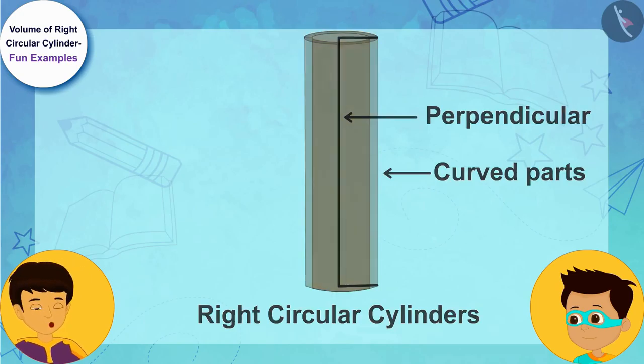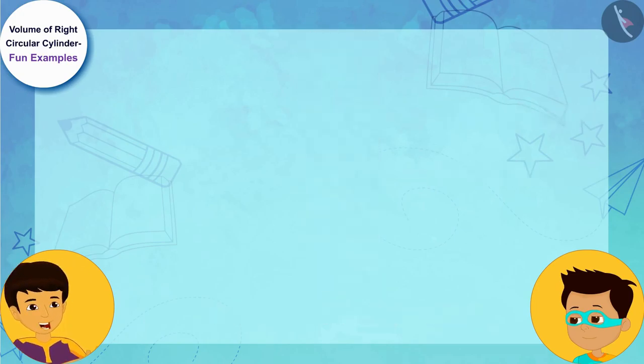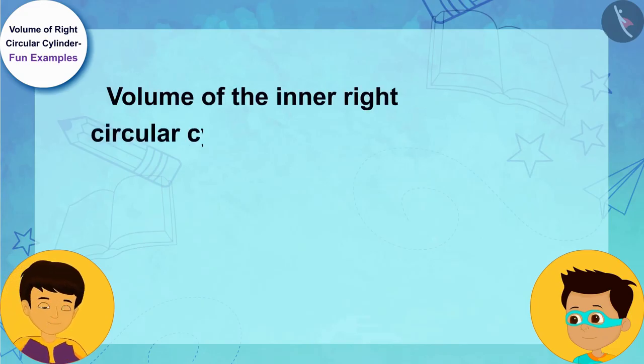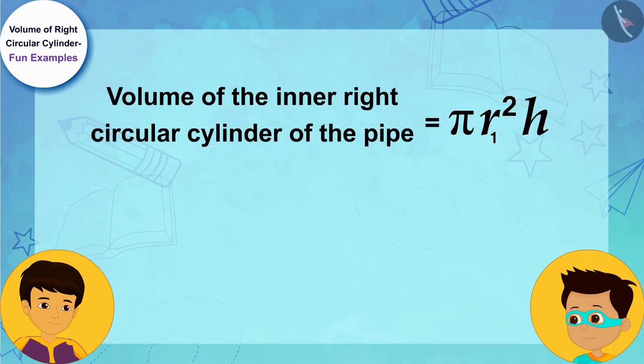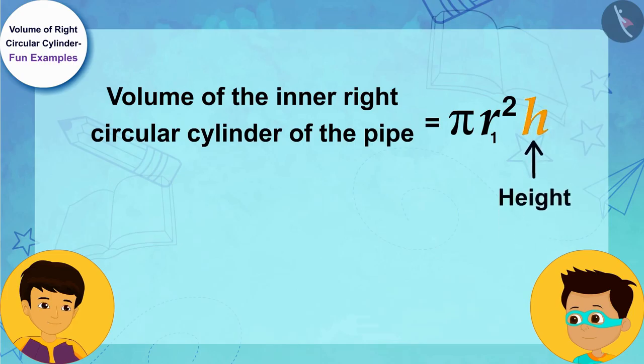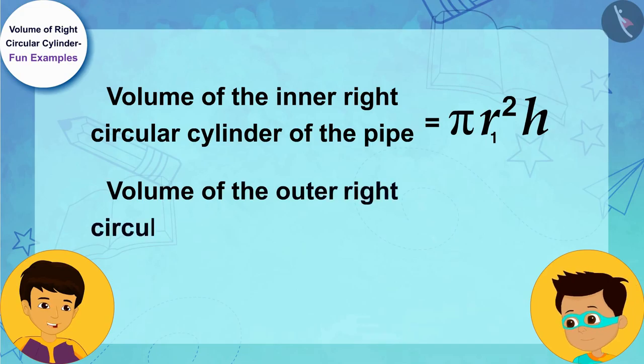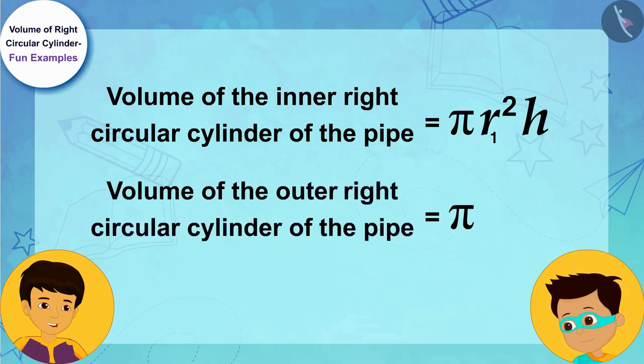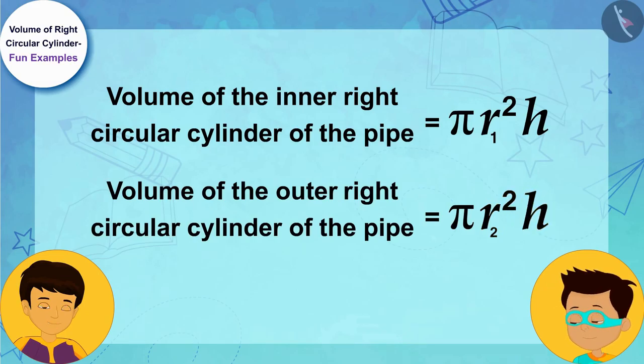Absolutely right, Thomas. We can write the volume of the inner right circular cylinder of the pipe as π r₁² h, where r₁ is the radius of the inner base of the cylinder and h is its height. And we can write the volume of the outer right circular cylinder of the pipe as π r₂² h, where r₂ is the radius of the outer base of the right circular cylinder and h is its height.